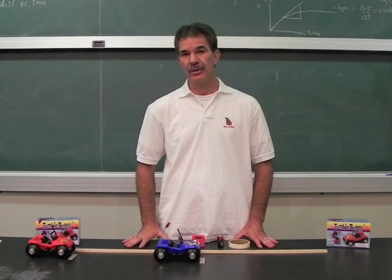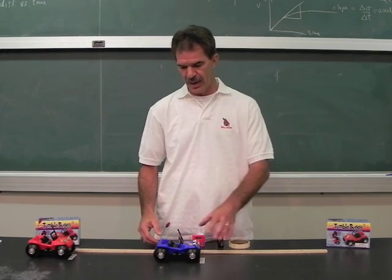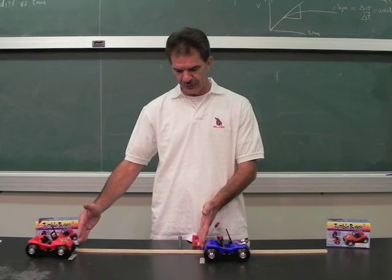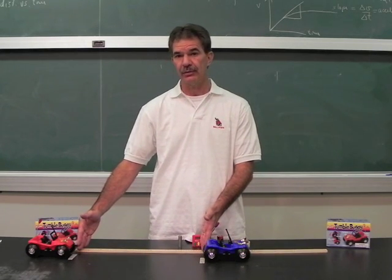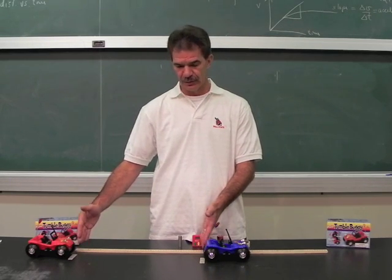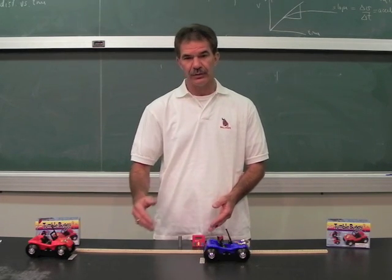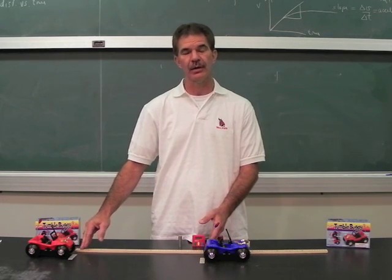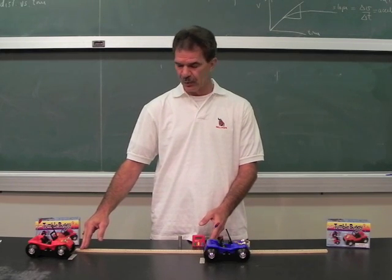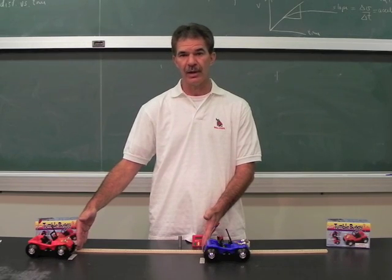In order to determine the relative speed as the faster car approaches the slower car from behind, we start out with the two cars a specified distance apart — in this case, 50 centimeters. Students will turn on and release both cars at the same time and stop the timer when the faster car meets the back end of the slower car. In this case, the relative speed will be the starting distance, 50 centimeters, divided by that amount of time.